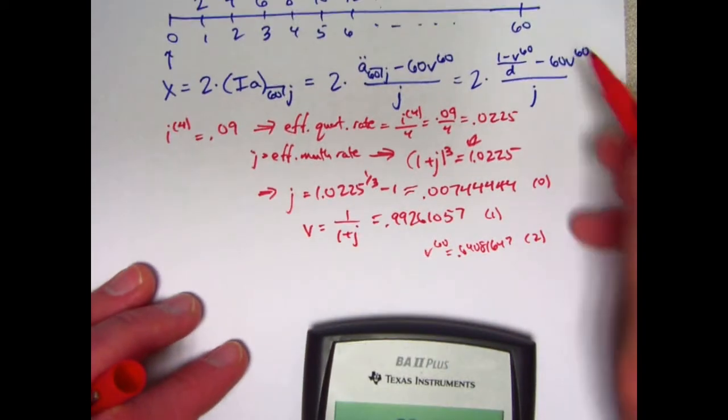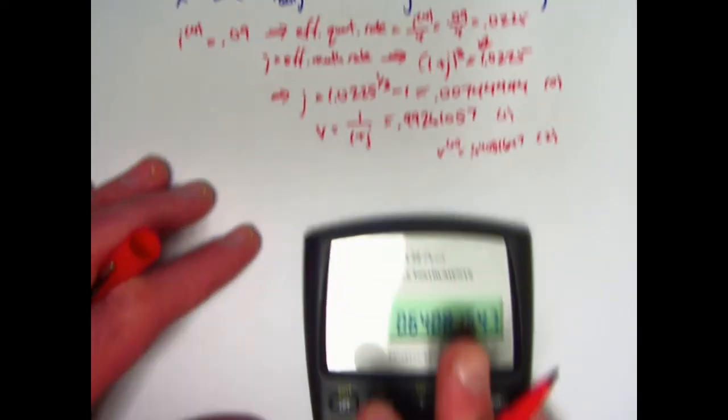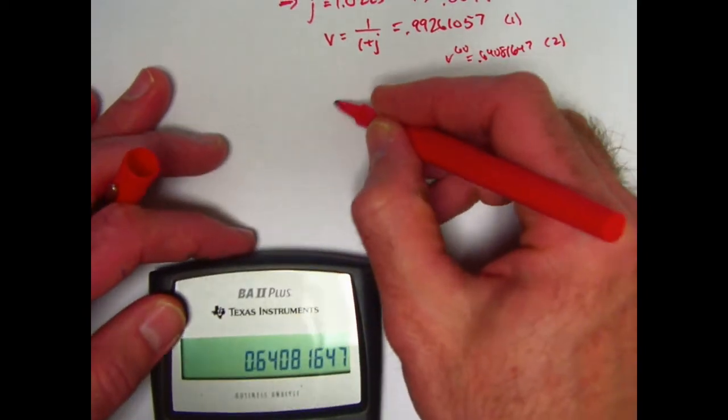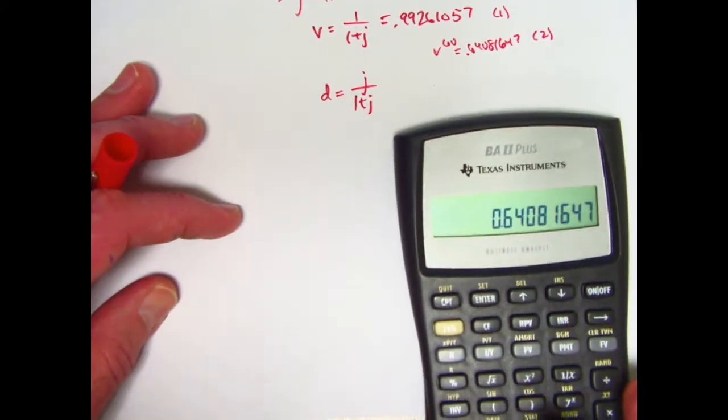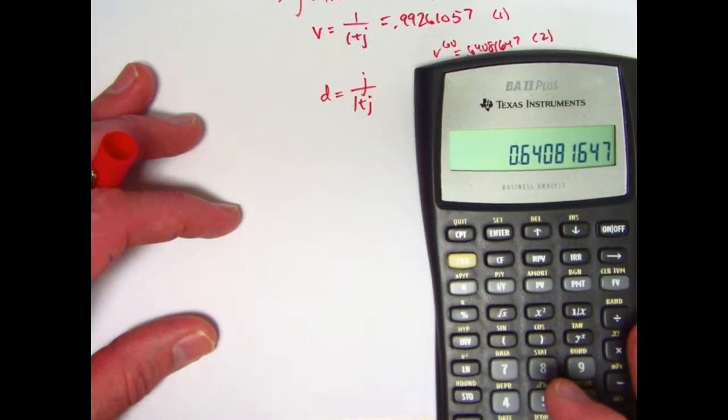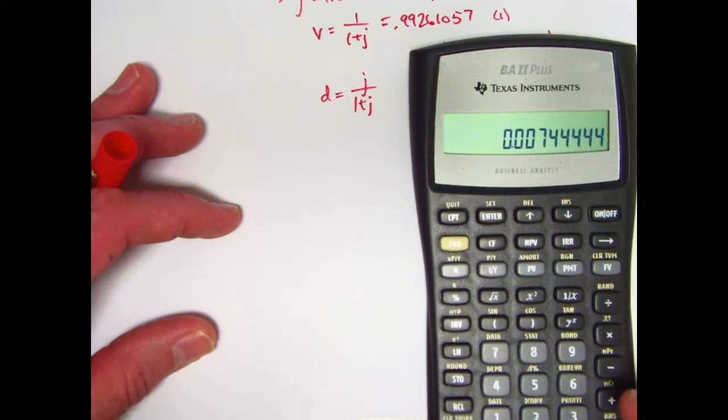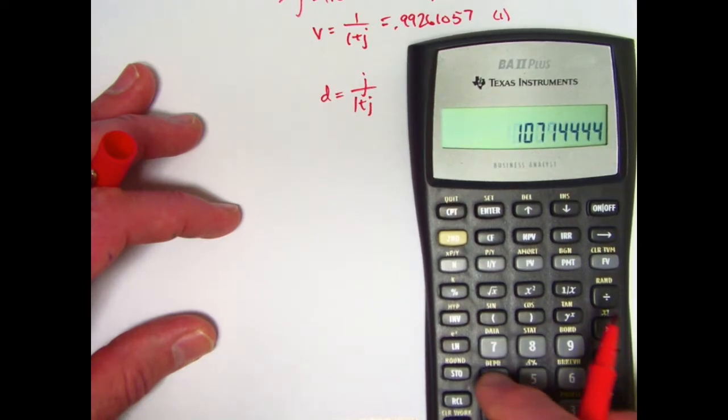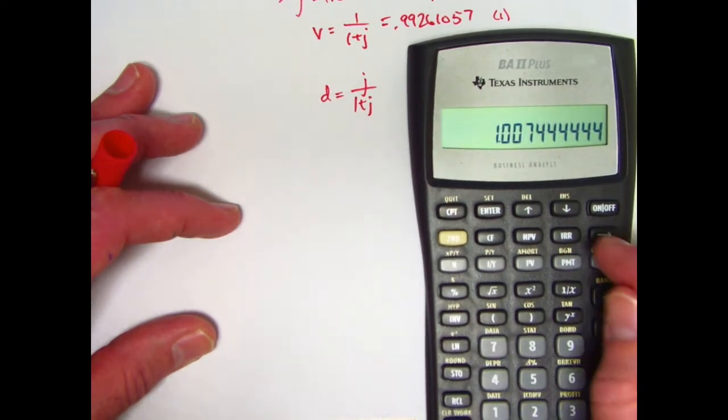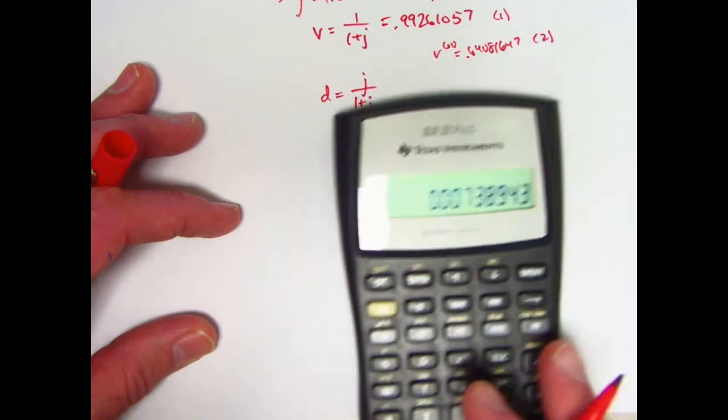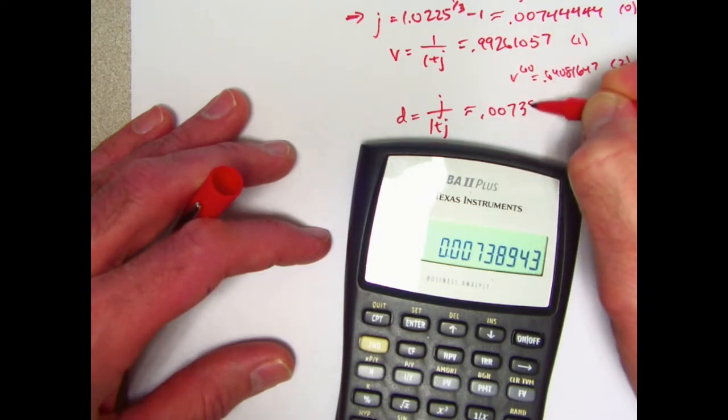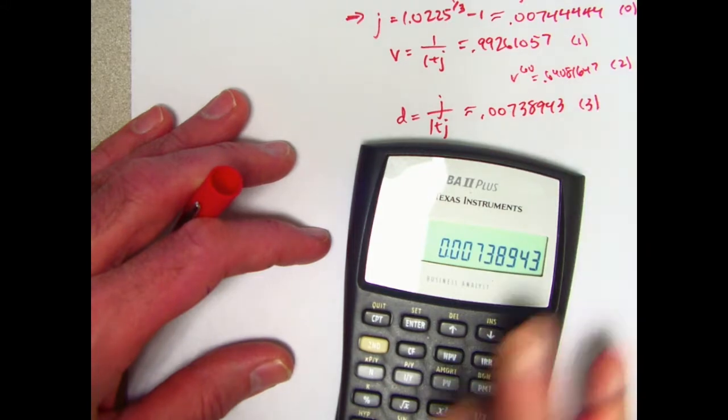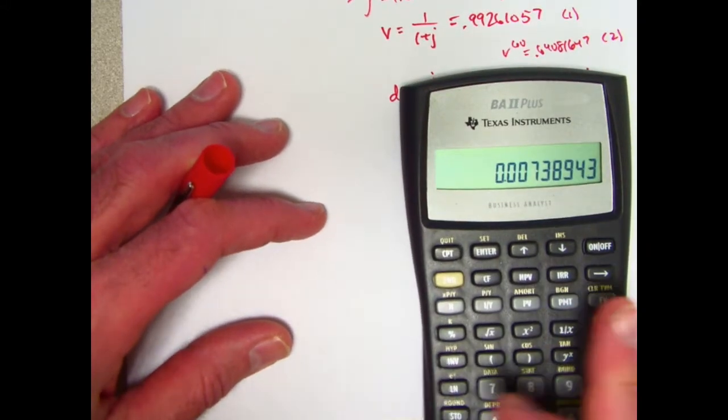The last thing I'm going to store in a register is the value of D. D is going to be J over 1 plus J. J is in register 0, recall 0, and divide by 1 plus that number. D is about 0.00738943. I'll store that in register 3.